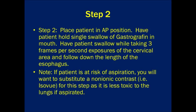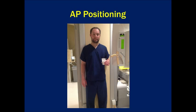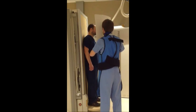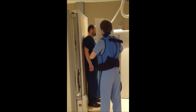Place the patient in the AP position. Have the patient hold a single swallow of gastrographin in their mouth, then have the patient swallow while taking 3 frames per second exposures of the cervical esophagus while following the contrast bolus caudally. Keep in mind that gastrographin should not be used if there is concern for aspiration — in those cases, use a non-ionic contrast such as ISO view instead. Here you can see the resident following the contrast bolus with the fluoroscopy image intensifier with the patient in the AP position.